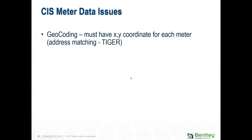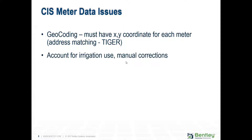When you bring in customer information system data or metering billing data, geocoding is required — because sometimes the utility gives you an Excel spreadsheet with addresses, but SewerGEMS doesn't know what those addresses mean spatially. You need to convert them to X and Y coordinates so you can overlay your model with the location of those billing records.